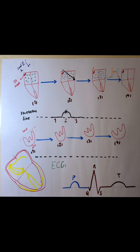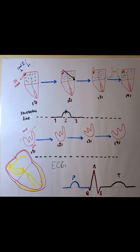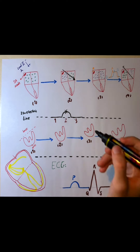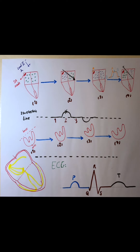Repolarization starts from around the SA node again, where the other parts of our atrium are still depolarized. An electric current is formed which is in this direction, exactly opposite to Lead 2. So here we are going to have a negative repolarization wave.